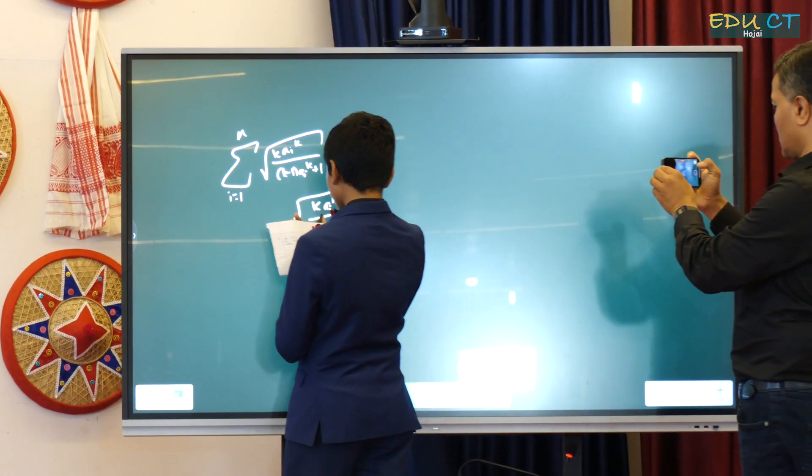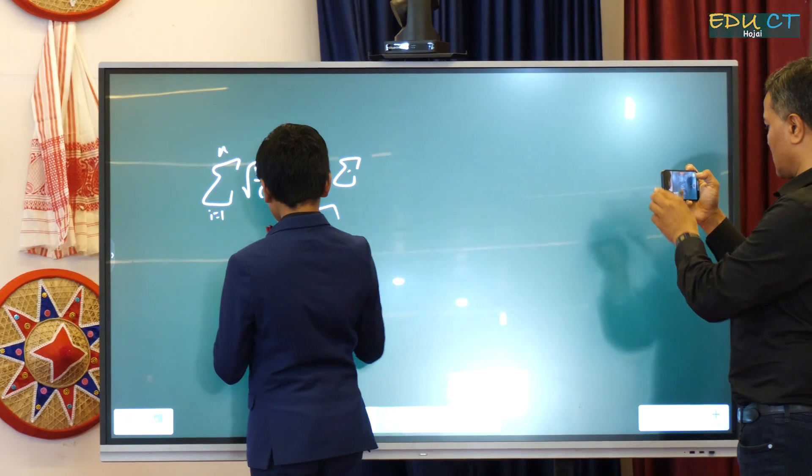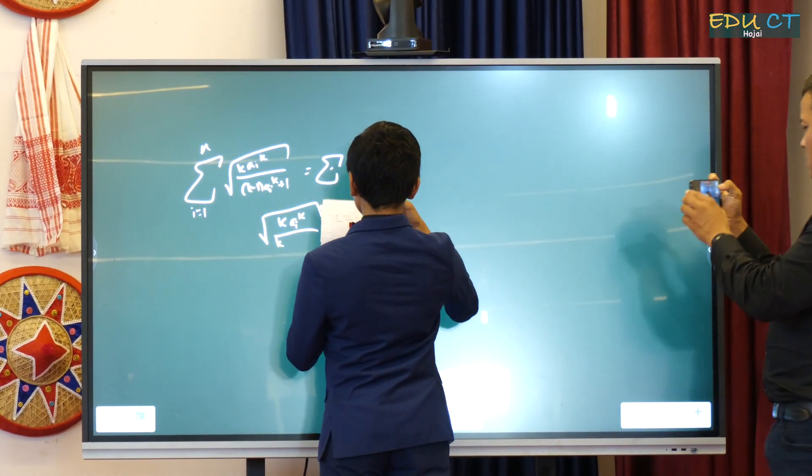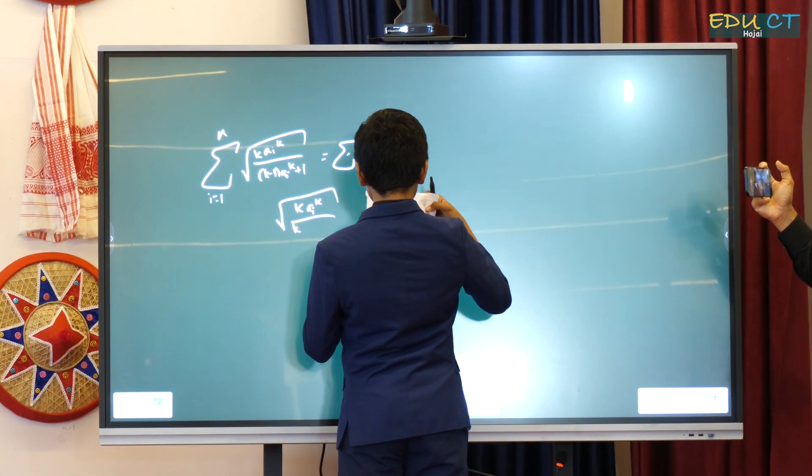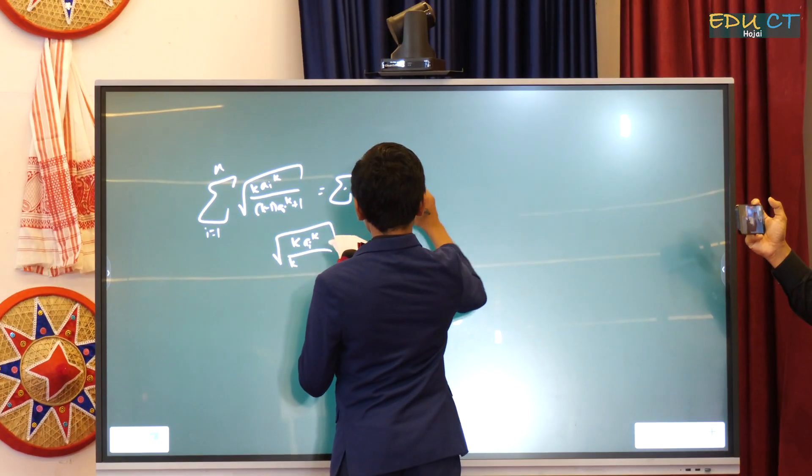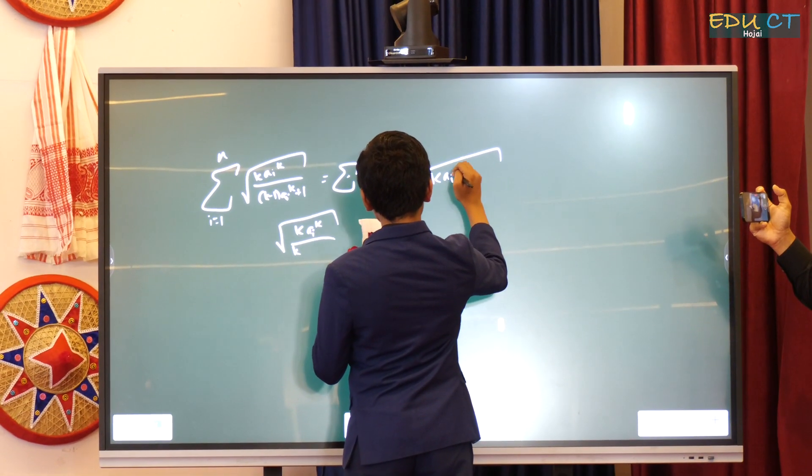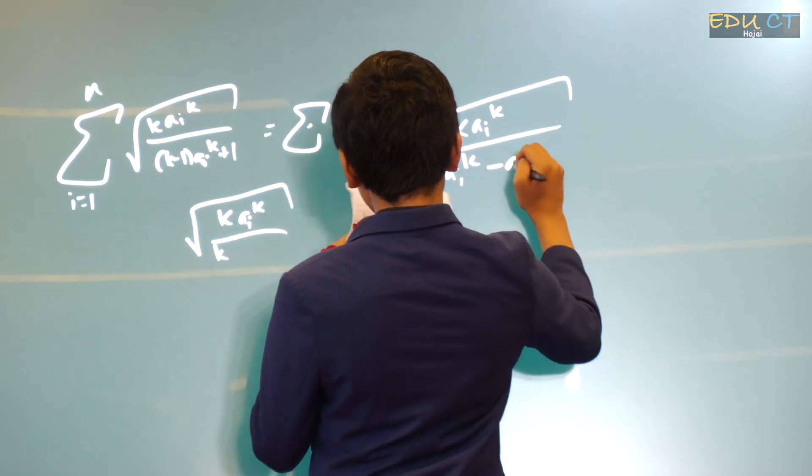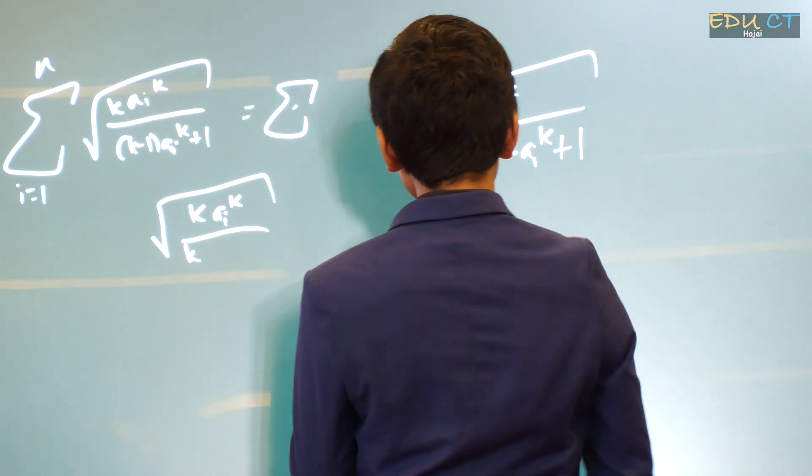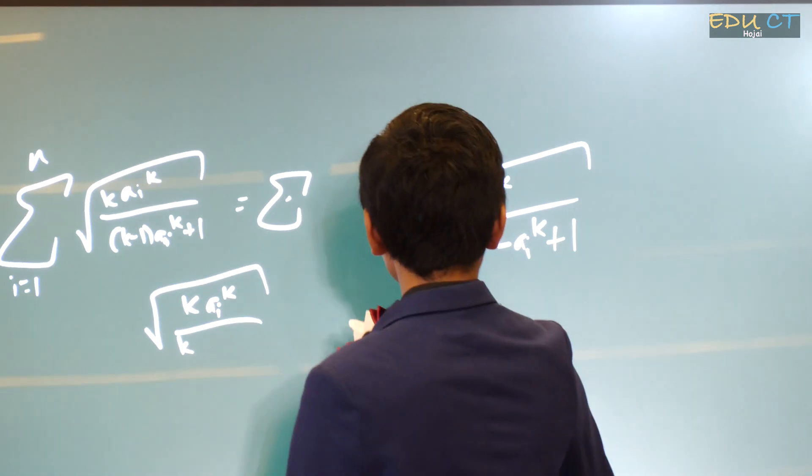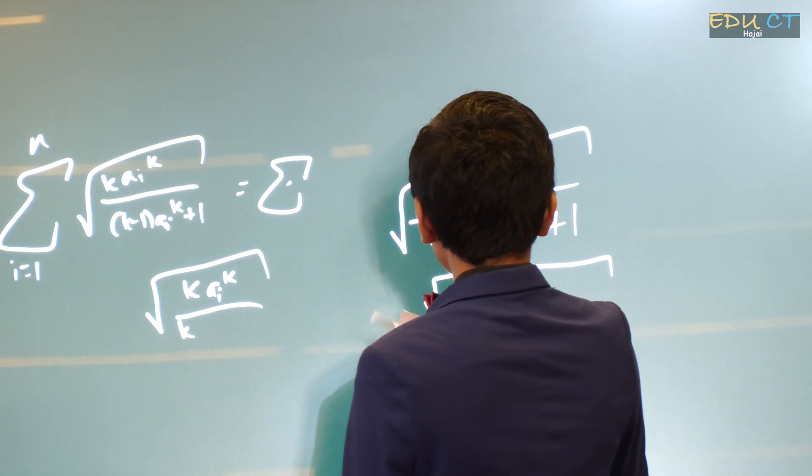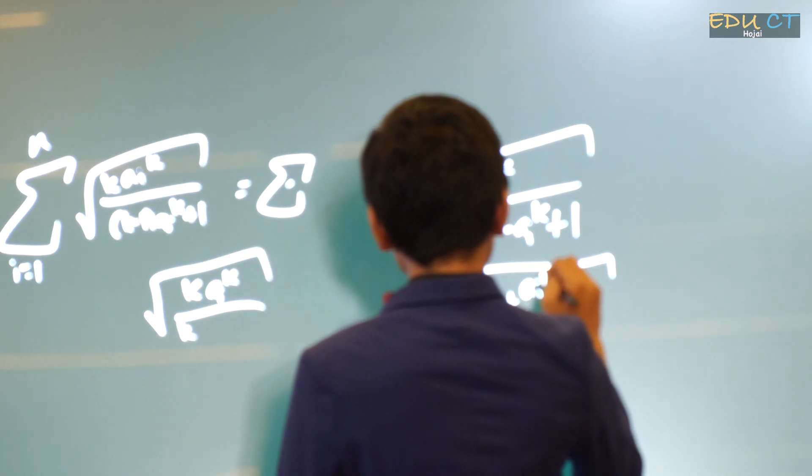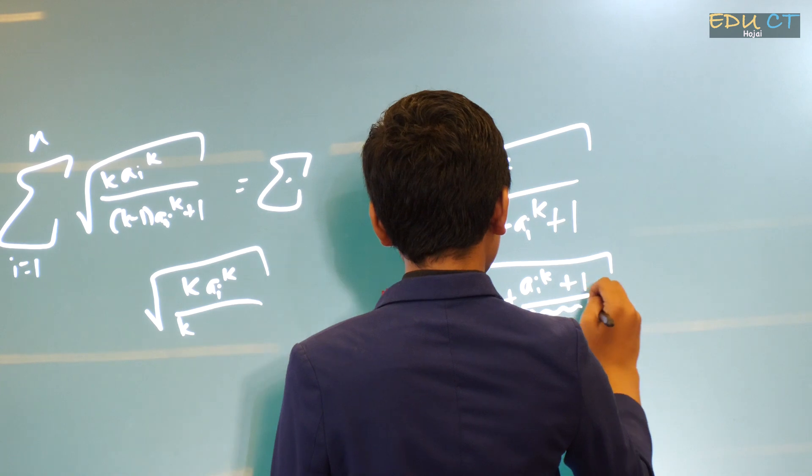This is a very tricky problem, but let's see. KAI to the K. So, I'm going to try and approach it like this. So, we have KAI to the K divided by KAI to the K minus AI to the K plus 1, which gives us square root of 1 plus AI to the K plus 1 over all of this.